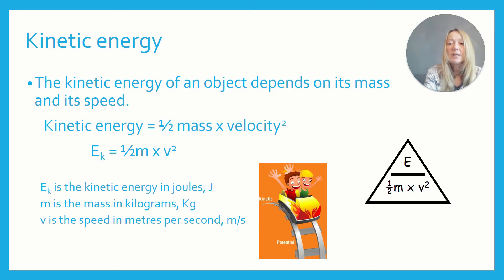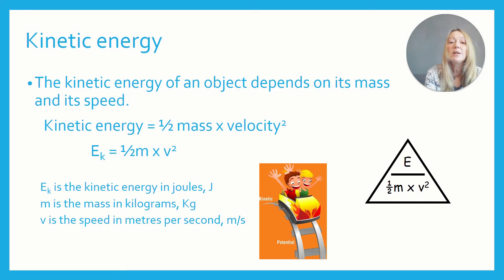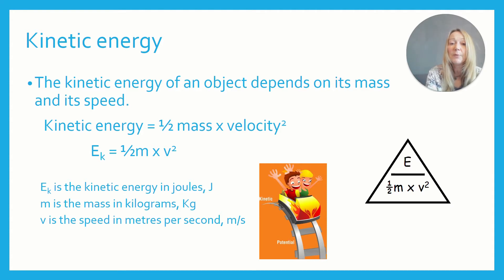We're going to look at kinetic energy first. This is an equation you may have come across before. The kinetic energy of an object applies to anything that's moving — anything with mass that has a velocity will have kinetic energy. The kinetic energy equation is: kinetic energy equals half the mass times the velocity squared.